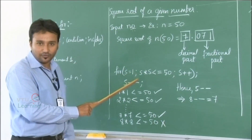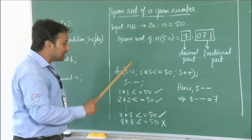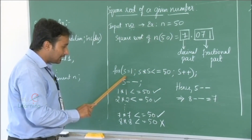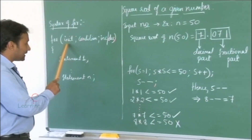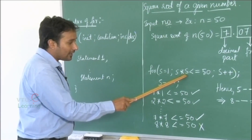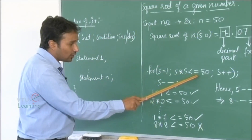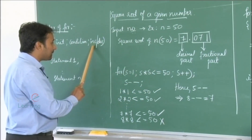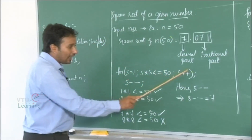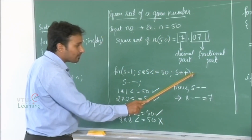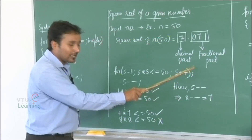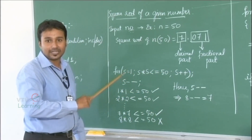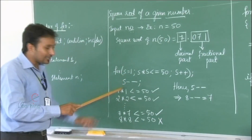Let us look at the first for loop which computes the decimal part. The loop is: for s equals 1, s*s less than or equal to 50, s++. Here s is initialized to 1, s*s is the condition, and s++ is the increment. The for loop is terminated using a semicolon, which means the entire loop executes without running any statements inside the loop block.